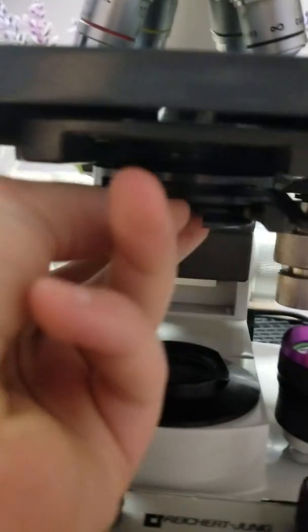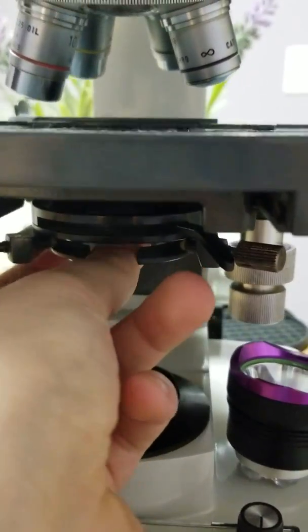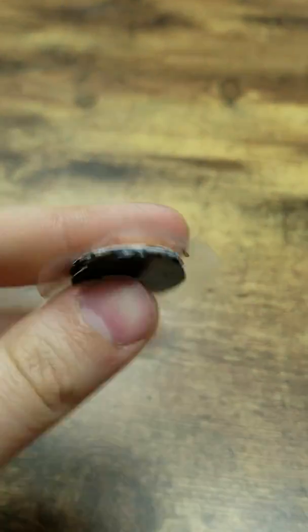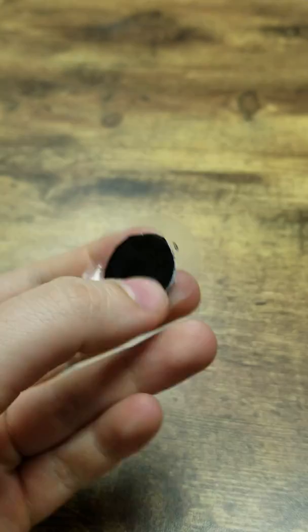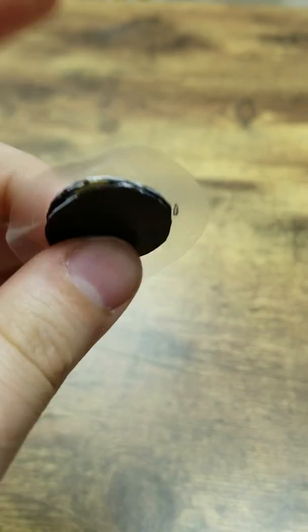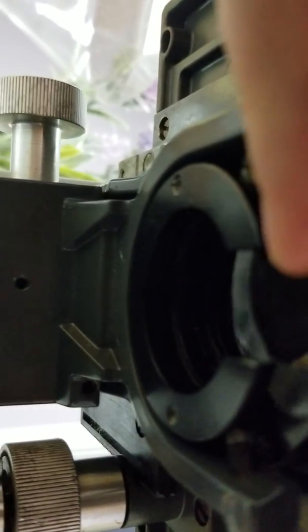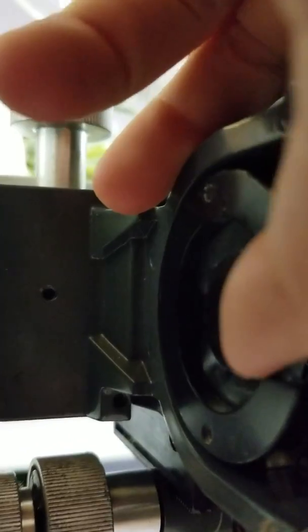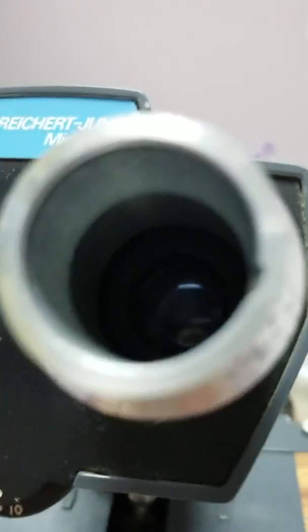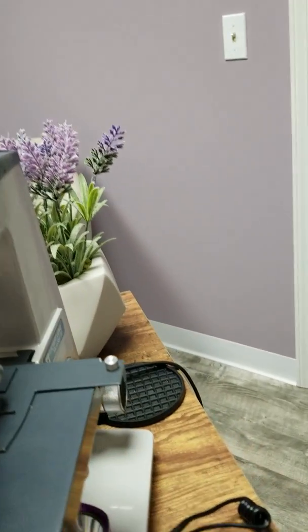And then to change it to dark-field, I have a little homemade stop. So it's just business cards cut up into the little circular stop. I have like three layers there. And then just place it in the, slide it right in the condenser there, and it's in. So then you just take the eyepiece out, look into it, and here I'll actually show you.